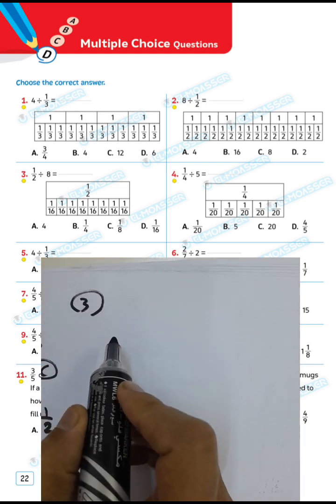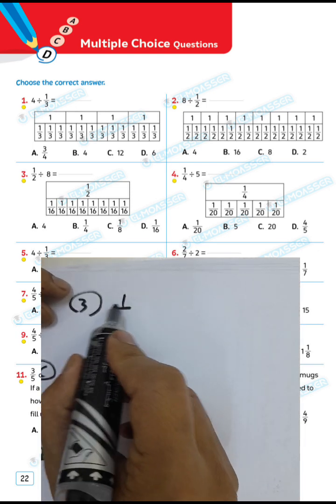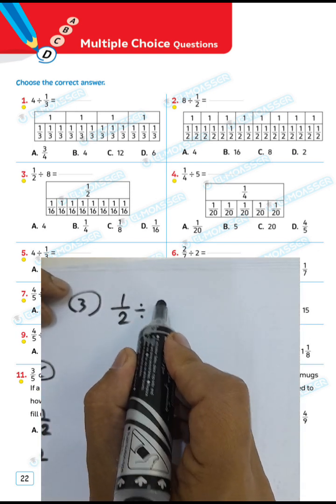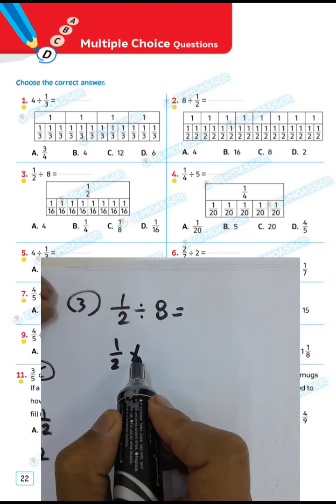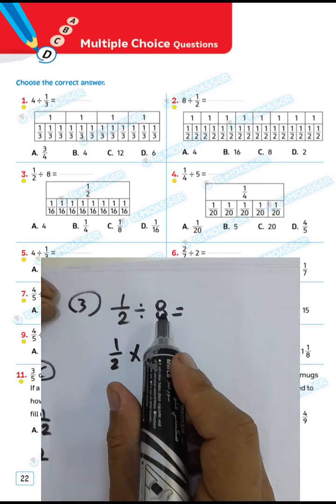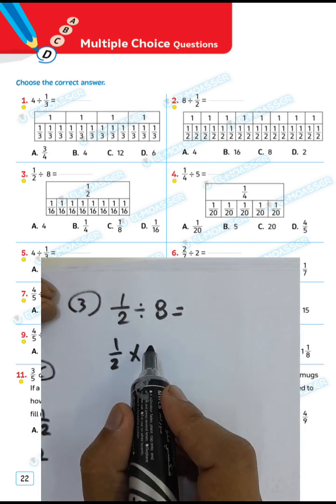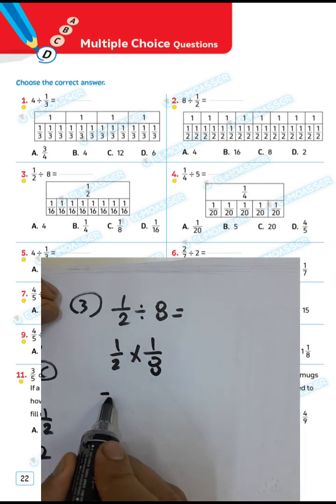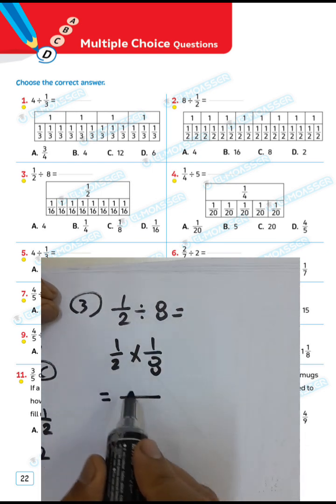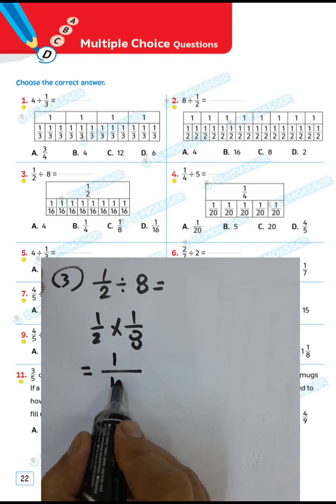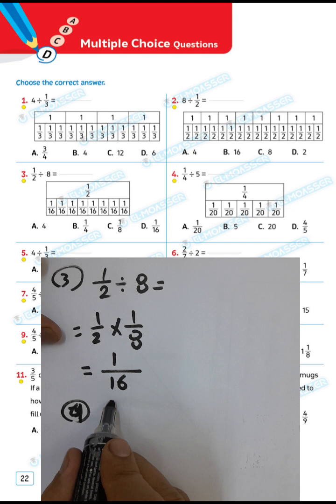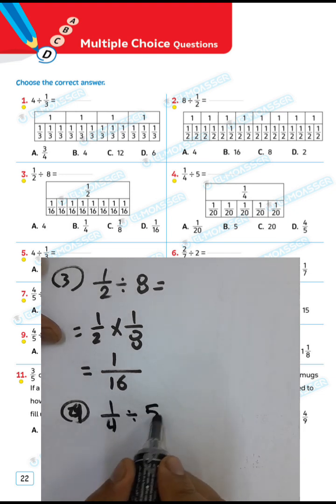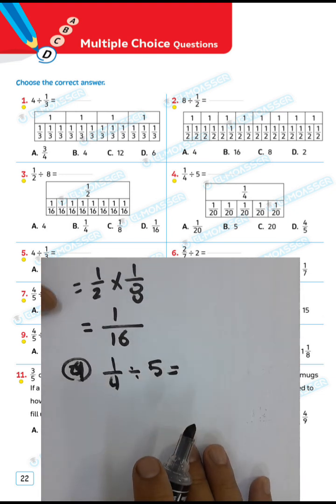Question number 3: 1/2 divided by 8. We can solve this example by writing 1/2 and converting from division to multiplication, then raising the inverse of 8, which is 1 over 8. Then 1 times 1 equals 1, and 2 times 8 equals 16, so the result will be 1 over 16.